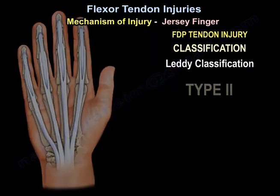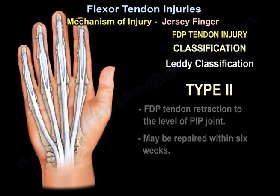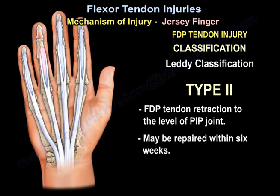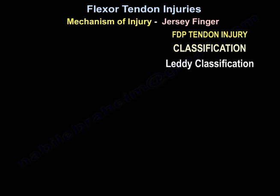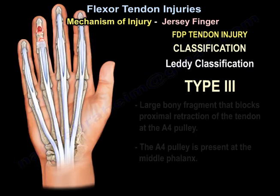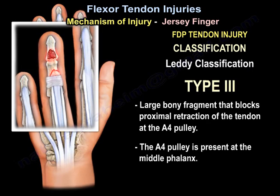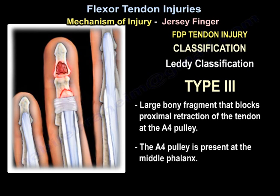Type 2 injury retracts into the PIP joint and can be reinserted up to 6 weeks. Type 3 from the Leddy classification involves a large bony fragment that blocks proximal retraction of the tendon at the A4 pulley, which is present at the middle phalanx.